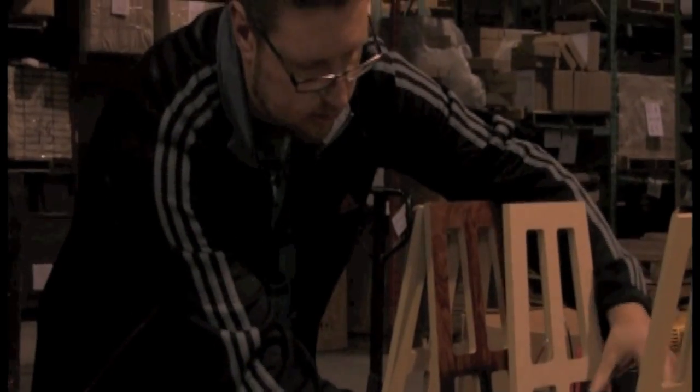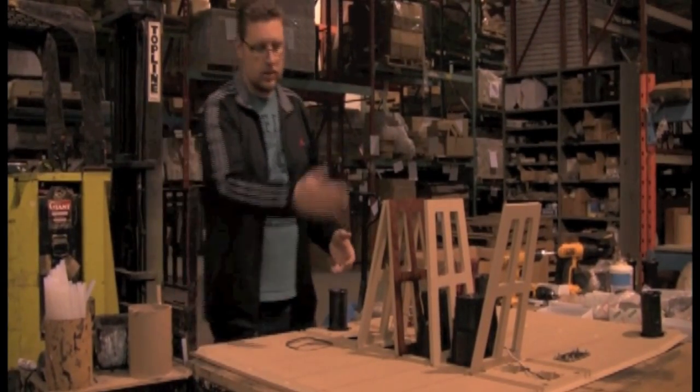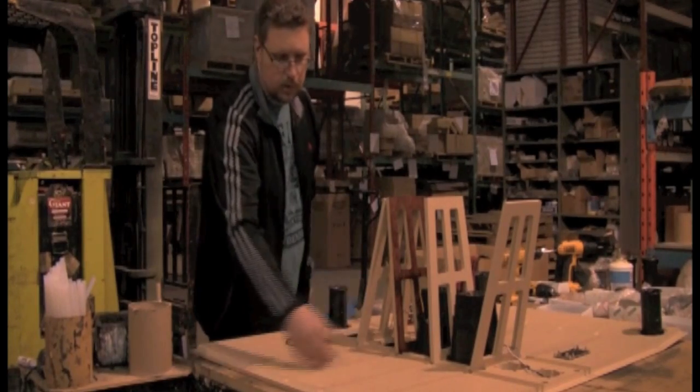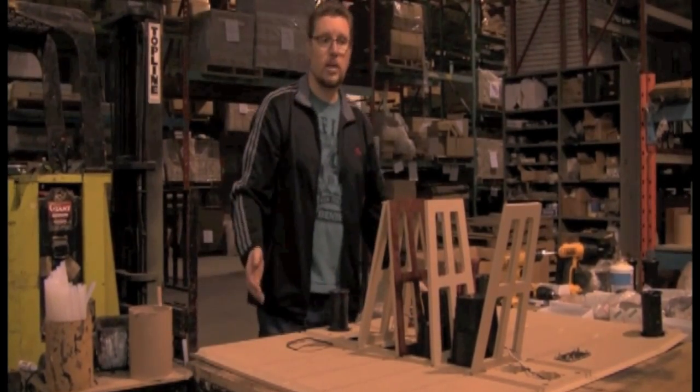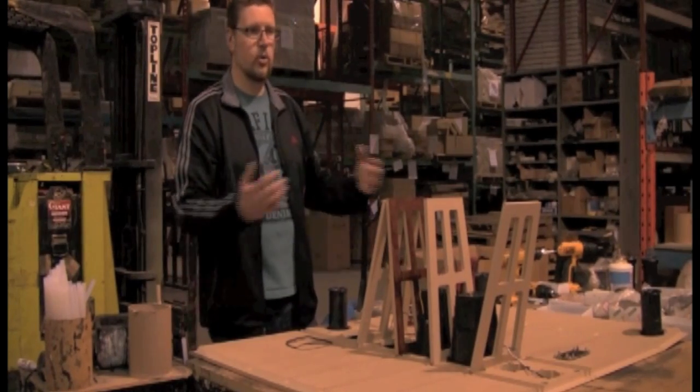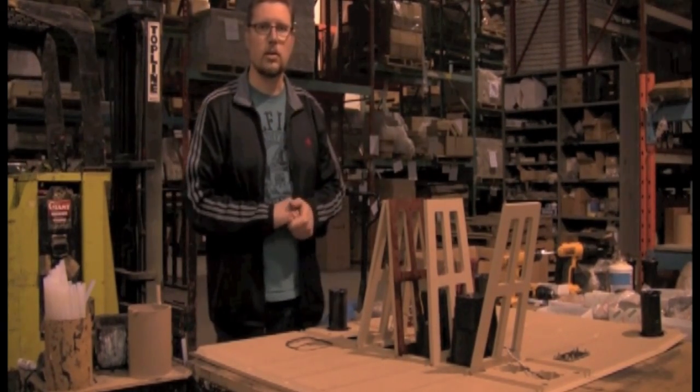So essentially, once all of these components are mounted, the box is glued, glue is put in all of the grooves and all of the openings in the back of the cabinet. It's folded around the top and bottom, and it's clamped together until the glue dries.